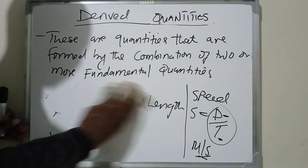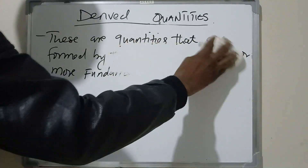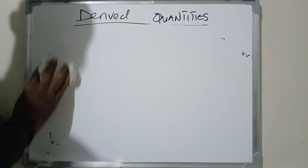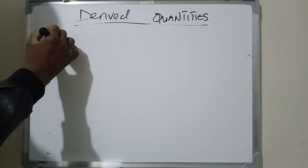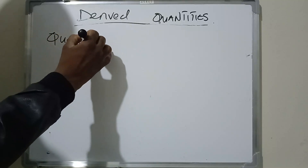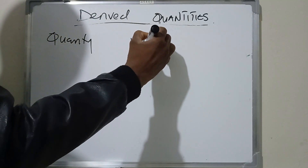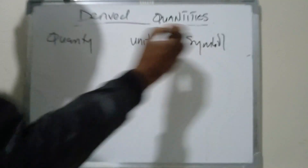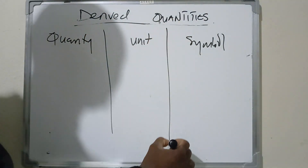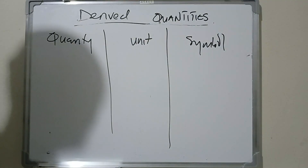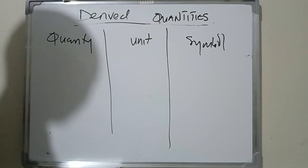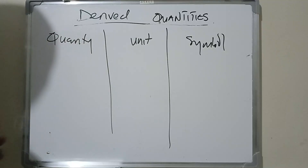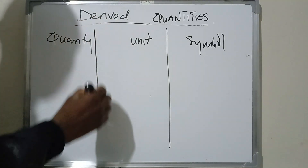Let's look at the table of derived quantities and their units. The table has columns for quantity, unit, and symbol. Notice that every derived quantity will be a combination of the fundamental quantities we looked at earlier, and the units will be a combination of the base units we looked at earlier.